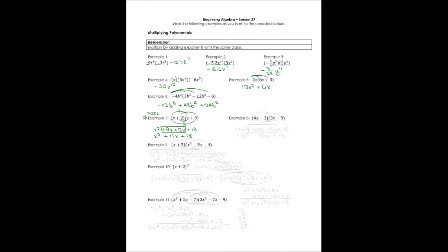Let's try FOILing example 8. First terms: 4x times 3x gives 12x squared. Outside: 4x times negative 5 gives negative 20x. Inside: negative 3 times 3x gives negative 9x. Last terms: negative 3 times negative 5 gives positive 15. Combining the like terms in the center, we get 12x squared minus 29x plus 15.